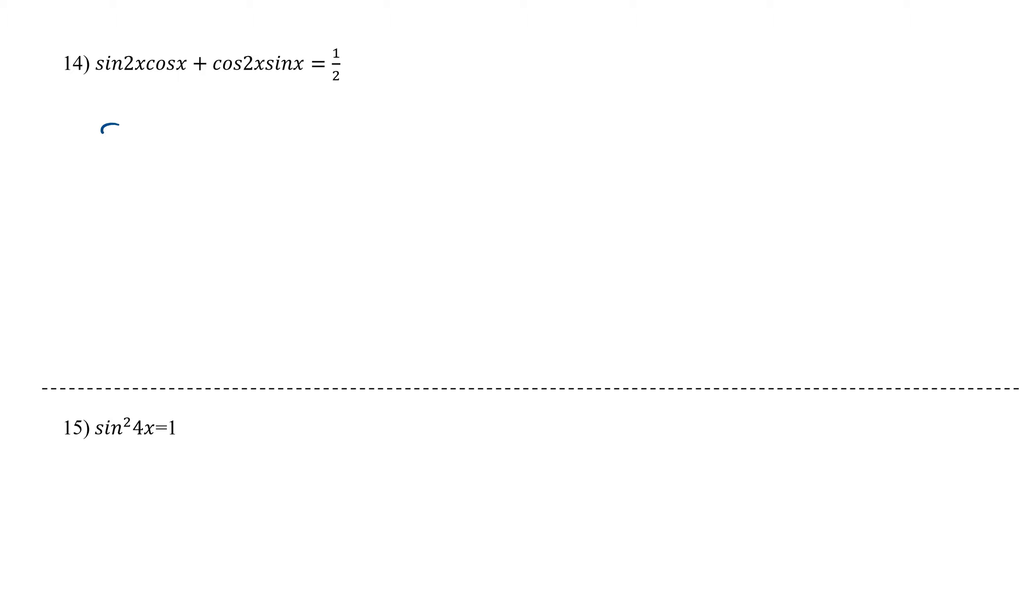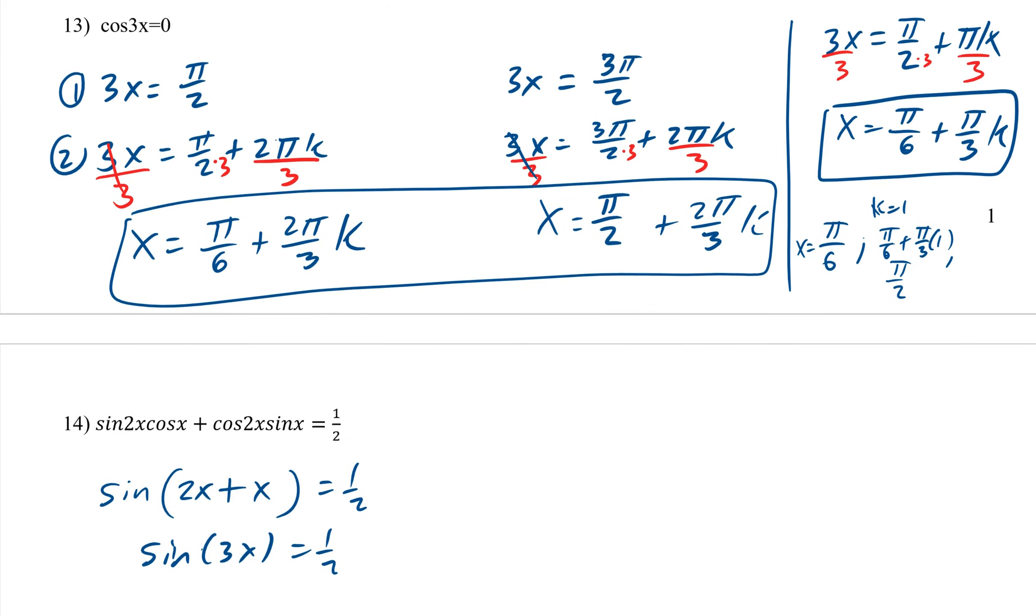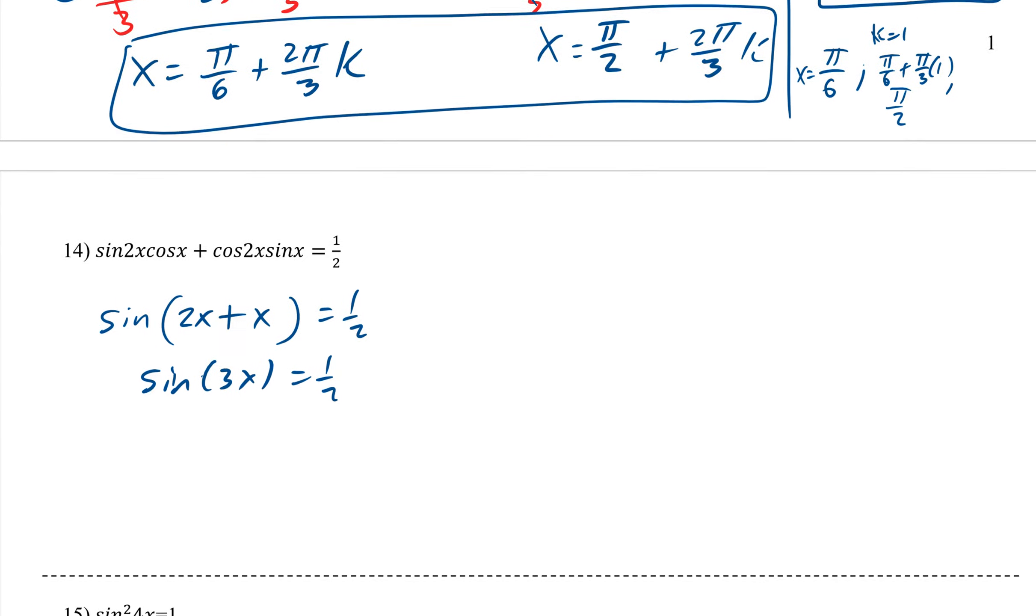Since there's sharing, we know it's the sharer, which is sine. And since it's plus, we know it's plus. So this would be 2x plus x equals a half. So this is really just sine of 3x equals a half. On some of these, you have to modify them. It's very similar to what we just did up here with cosine of 3x.